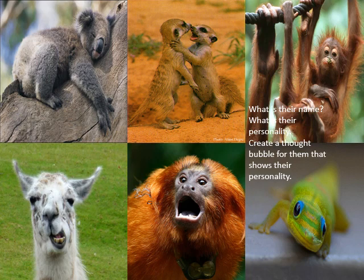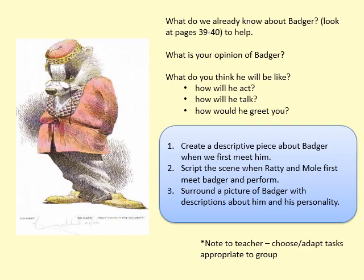This feeds into Wind in the Willows because of all the different animal characters in there, so you need to have them in the back of your mind while you're doing this. Now we haven't met Badger yet — but on page 39 to 40, starting halfway down page 38, it's the start of the Wild Wood chapter 3, to the bottom of page 39 — this is us hearing about Badger before we've even met him.